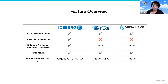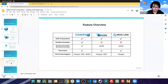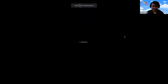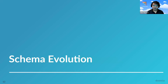As far as the actual file formats that your table can consist of: with Iceberg you can do Parquet, Avro, or ORC as far as what files can make up your table. With Hoodie it's Parquet or ORC. And then for Delta Lake it's only Parquet.